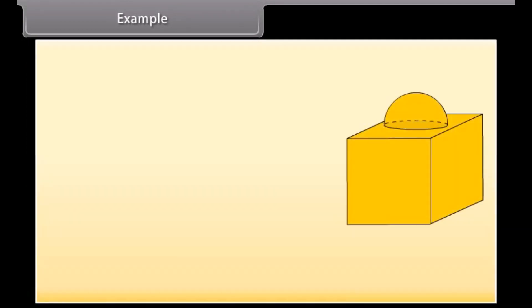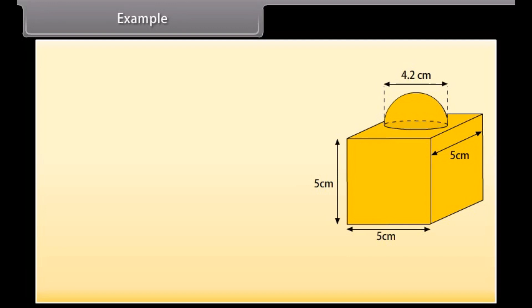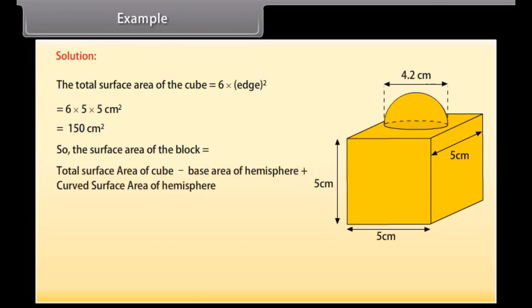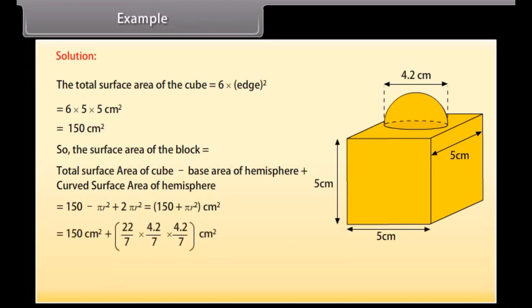Example. This decorative block is made of two solids — a cube and a hemisphere. The base of the block is a cube with edge 5 cm, and the hemisphere fixed on top has a diameter of 4.2 cm. Find the total surface area of the block. Solution: Total surface area of the cube = 6 × edge² = 6 × 5 × 5 = 150 cm². Since the part of the cube where the hemisphere is attached is excluded, total surface area of the block = total surface area of cube − base area of hemisphere + curved surface area of hemisphere = 163.86 cm².